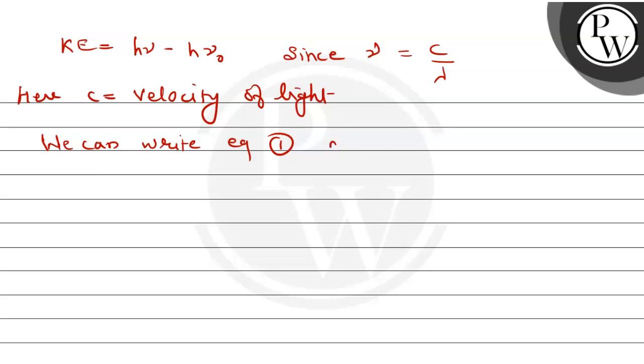Equation one as kinetic energy equals to hc by lambda minus hc by lambda not. Here h and c are common, so kinetic energy equals to hc times 1 by lambda minus 1 by lambda not.